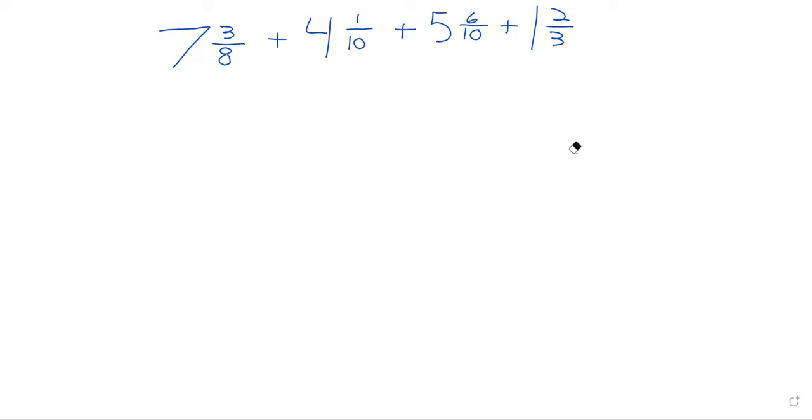And what the textbook would like us to do, and I always say the textbook, what the Department of Education would like us to be able to do and present to students, is mental approximations. So, we look at this, and we say, well, the seven, and the four, and the five, and the one. Those are hopefully not giving us problems. Four and one is five, and five is ten, and seven is seventeen.